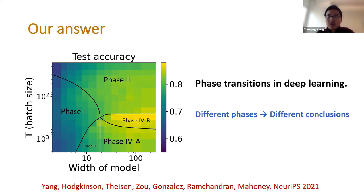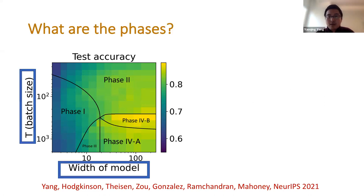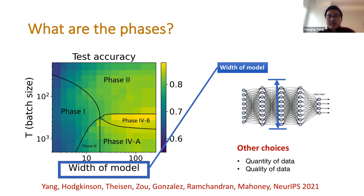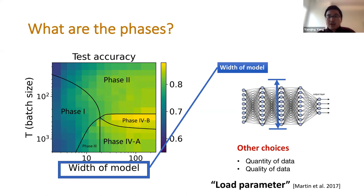We show a so-called phase plot. The x-axis represents the width of the model — essentially the number of hidden units. In our ablation studies we used other parameters on the x-axis as well. All of these parameters, like model width and quantity of data, represent some notion of the capacity of the machine learning problem — these are called the load parameters in statistical physics of learning.